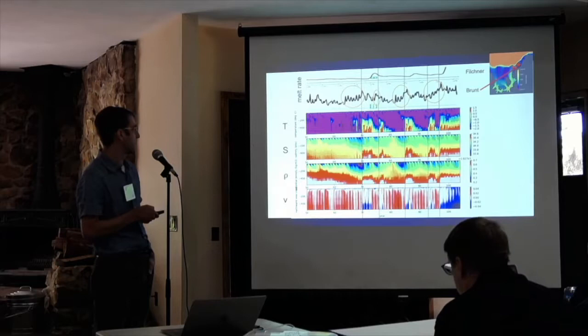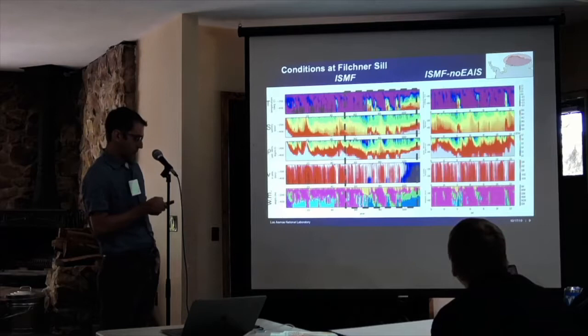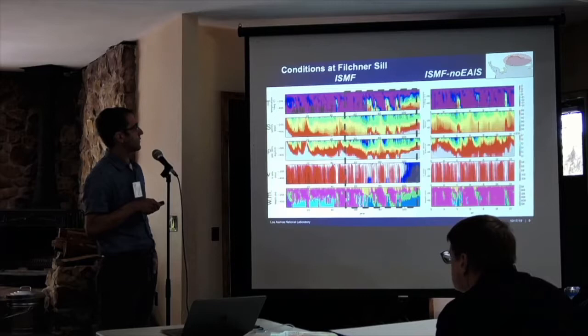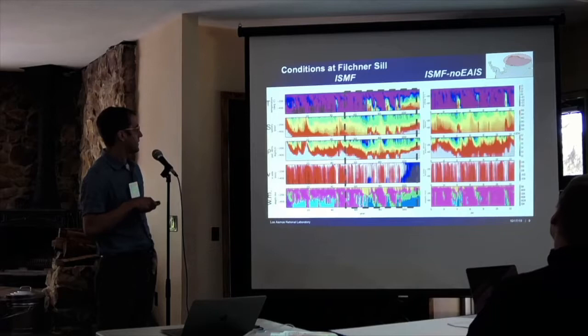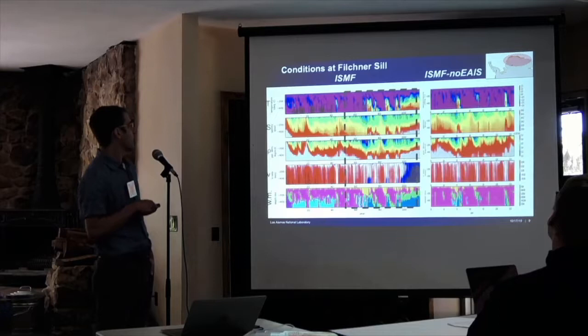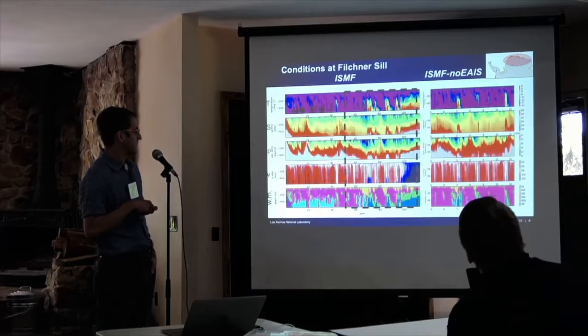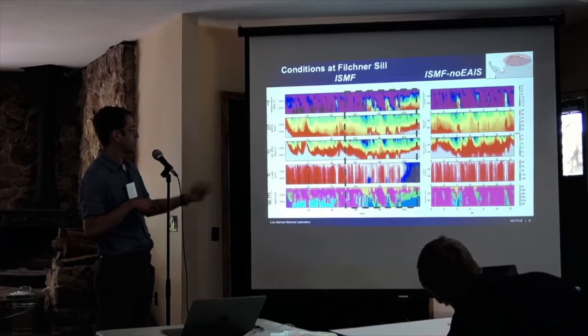Each of these intrusion events is preceded by freshening events at the surface that gradually decrease the density across the full depth. Looking at the time series of ice shelf melt for Filchner-Ronne — generally low and then eventually going off the rails — but if we look at the Fimbul Ice Shelf, which is right next door, we can see that the melt rates preceding these freshening events are actually going up. There's correspondence between increased melt at Fimbul and other neighboring ice shelves and these freshening events that allow the incursions of CDW.